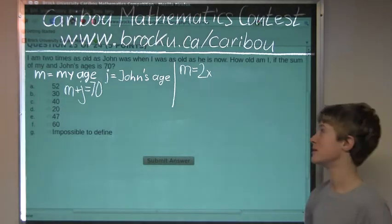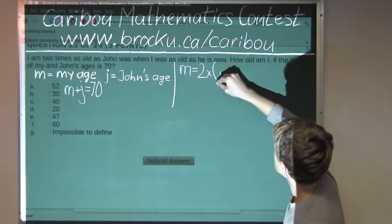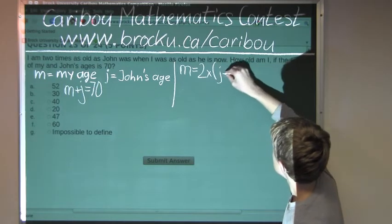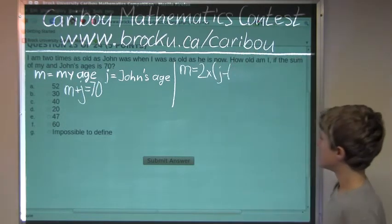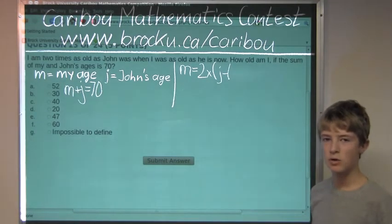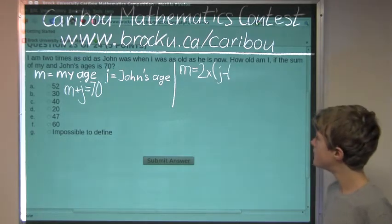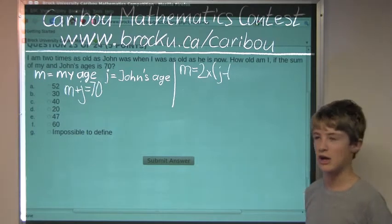That is John minus some years. An example of that would be if I was 8 years older than John, then 8 years ago I was as old as John is now. So, the age difference is just m minus j.